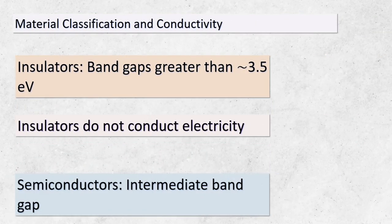Let's focus on the incredible contributions of chemists to the development of materials that power our world. Chemists are like wizards, conjuring up new substances that didn't even exist before. They're the masterminds behind inventing novel materials that hold unique qualities. Chemists are also the architects of change — they have the power to process natural materials in ways that transform them into substances with specific properties. Imagine turning a mundane material into something with exceptional electrical, magnetic, optical, catalytic, or mechanical traits. These chemically engineered materials form the backbone of our technology-driven society.